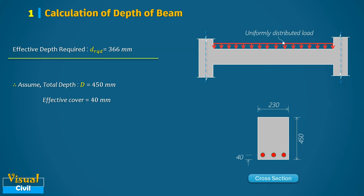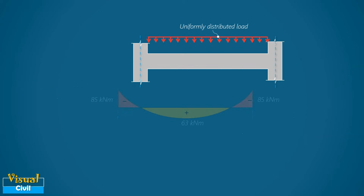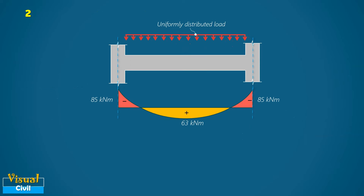To find the effective depth, we deduct the effective cover from the total depth, resulting in an effective depth of 410 mm. In the next step, we will compute the reinforcement on the tension side of the beam.